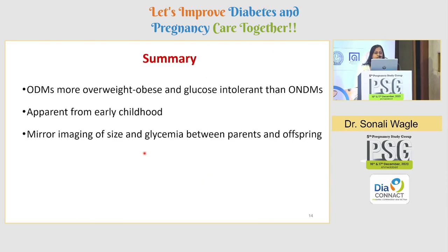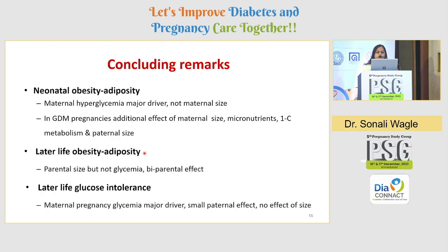In summary: ODMs were more overweight, obese, and glucose intolerant than ONDMs, with these phenotypes apparent from early childhood. A mirror imaging effect of size and glycemia was observed between parents and offspring. Concluding remarks: for neonatal obesity/adiposity, maternal hyperglycemia is the major driver, not maternal size, though in GDM pregnancies additional effects of maternal size, micronutrients, one-carbon metabolism, and paternal size were seen. For later life obesity/adiposity, parental size — both maternal and paternal — had the effect, not glycemia. For later life glucose intolerance, maternal pregnancy glycemia was the major driver with a small paternal effect and no effect of parental size.